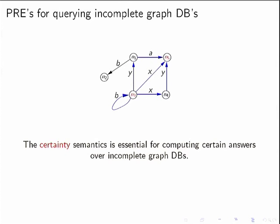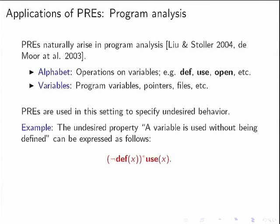So if you want to compute certain answers and reason about paths in incomplete graph databases, you need to work with parameterized regular expressions and the certainty semantics.